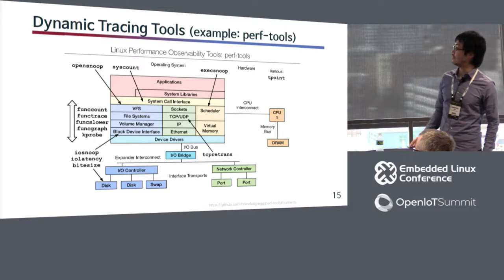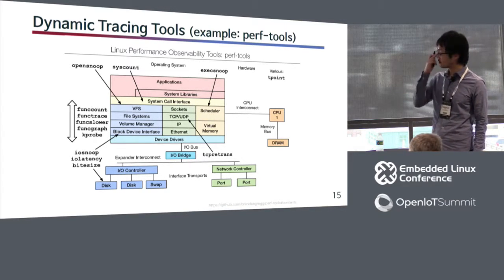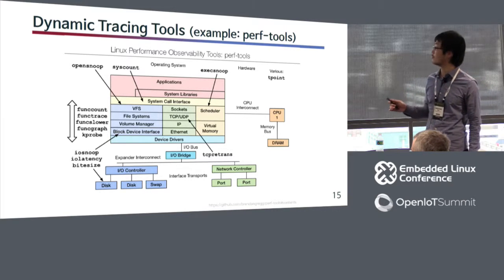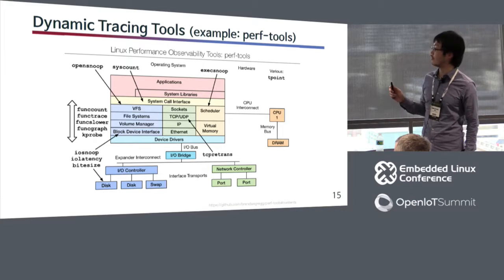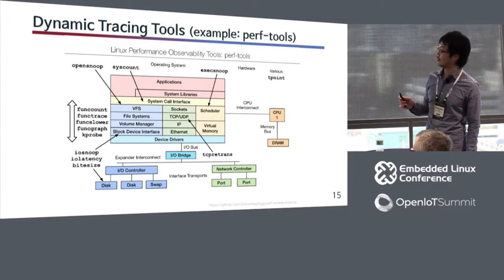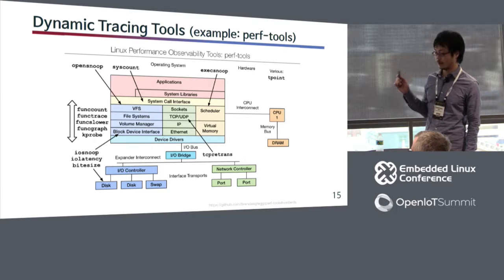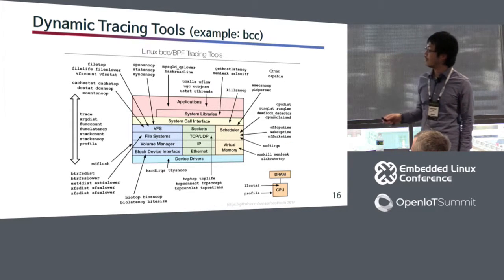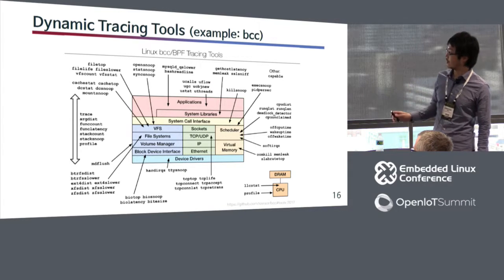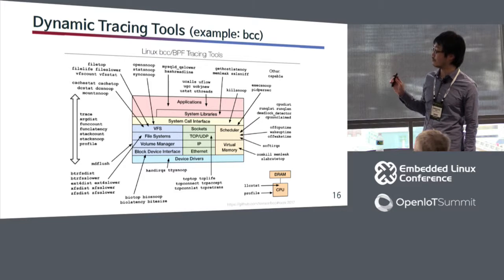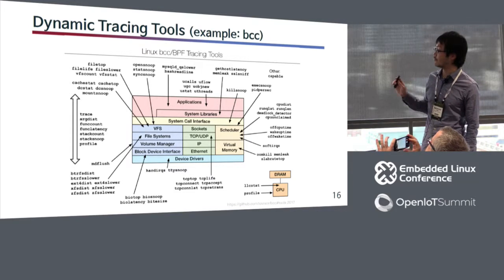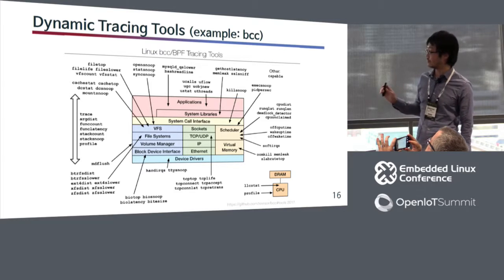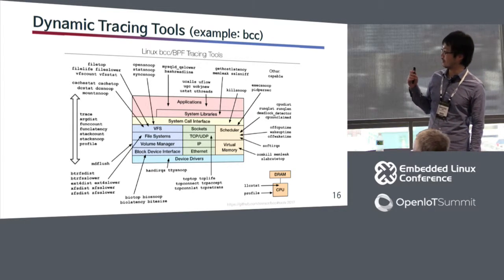Let's see some examples of dynamic tracing tools. This is a kind of single-purpose tool — it contains about a dozen commands, not so many, but it covers the minimum subsystems for performance analysis. And this is an example of BCC, a kind of programmable multi-tool. It contains really many commands and can approach many subsystems to achieve advanced analysis.